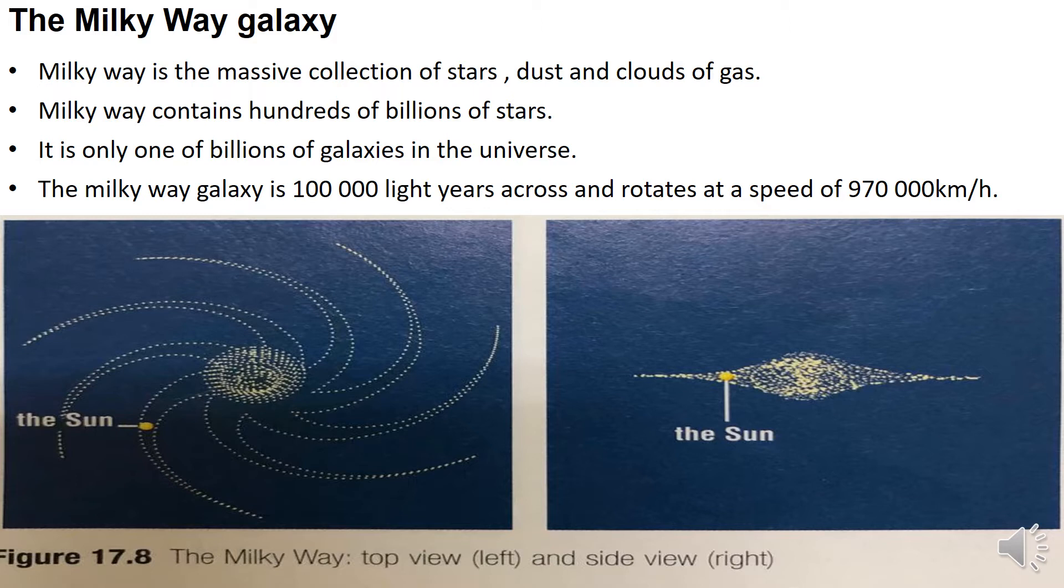The Milky Way galaxy is 100,000 light years across and rotates at a speed of 970,000 km per hour. We live in one of the large spiral galaxies called the Milky Way. The sun and its planets lie in this part of the galaxy about halfway out from the center. You can see that in the figure.